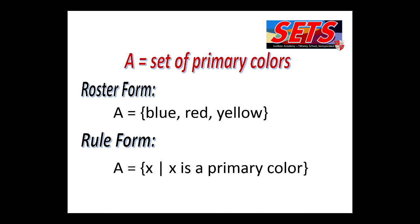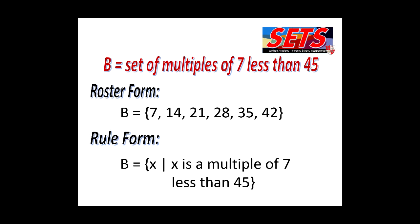Our first example is set A, the set of primary colors. In roster form: set A contains blue, red, and yellow. In rule form, we write: the set of all Xs such that X is a primary color. For set B, the set of multiples of 7 less than 45, in roster form the elements are 7, 14, 21, 28, 35, and 42. In rule form, we write: the set of all Xs such that X is a multiple of 7 less than 45.